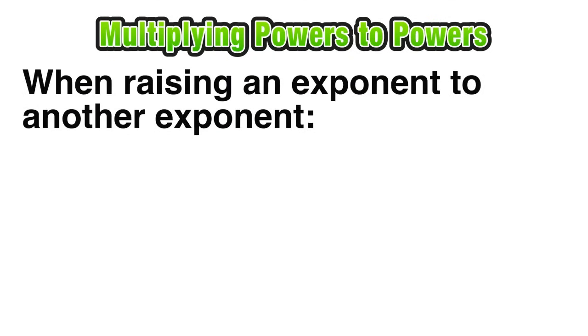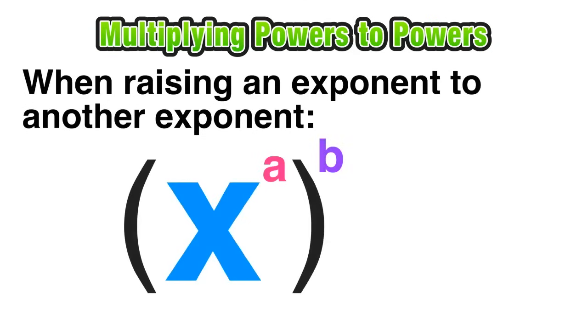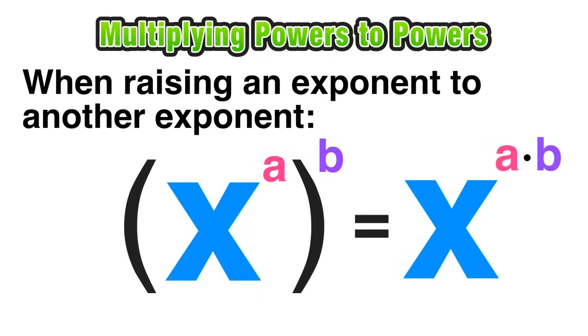So this law states that whenever raising an exponent to another exponent, in this case, x to the a raised to the power of b, it's going to equal x to the a times b, the product of the two exponents.